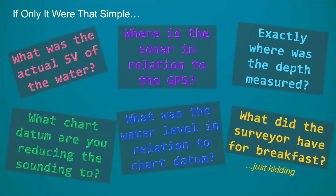In order to get our final depth, we've got to consider: what's the sound velocity of the water, are there factors changing it over the course of the survey, what datum are we measuring, what are the vessel offsets, what's the relationship between our echo sounder and our GPS or navigation system? These are all things that factor into the overall potential for error in your final dataset.